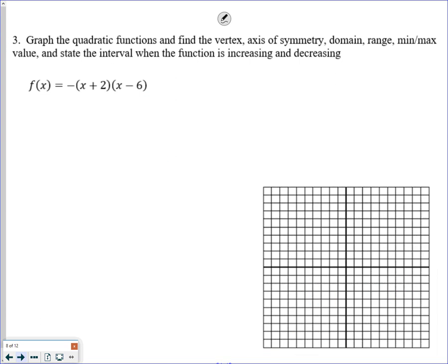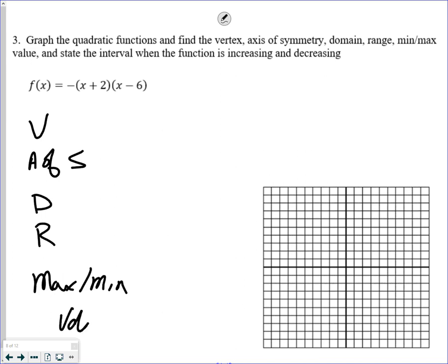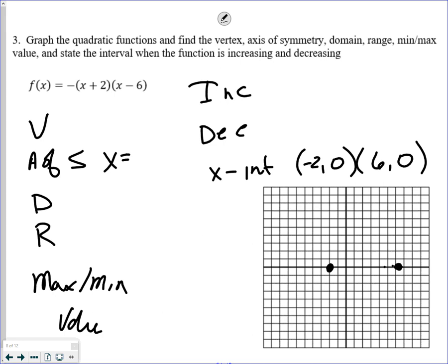Intercept form. Again, same questions now. Vertex, axis of symmetry, domain, the range, max or min, max or minimum value. I'm going to abbreviate to increasing, decreasing. And there's a throw-in question on this one as well. X-intercepts. All right. Let's start with the x-intercepts. The values that make the parentheses 0. So negative 2 gets you a 0. And positive 6 gets you a 0. So on the graph right now, I already know negative 2, 0, 6, 0. Now, how do I find the axis of symmetry? The axis of symmetry is the halfway point between these two. So negative 2 and 6. Add together, make 4. So halfway is 2.